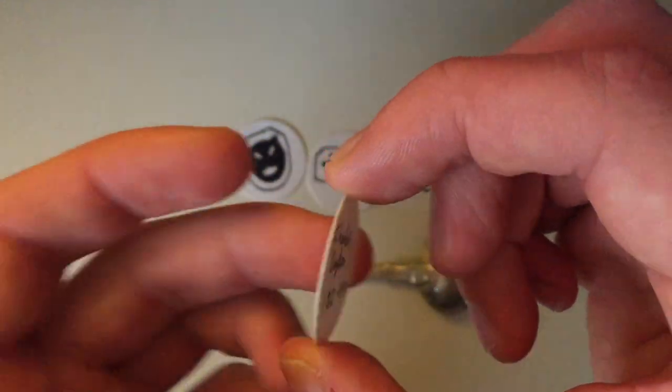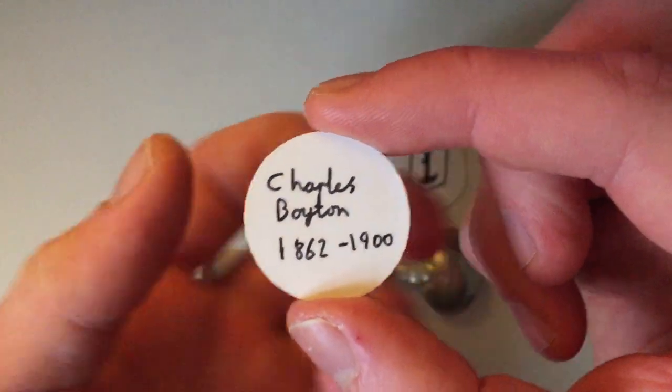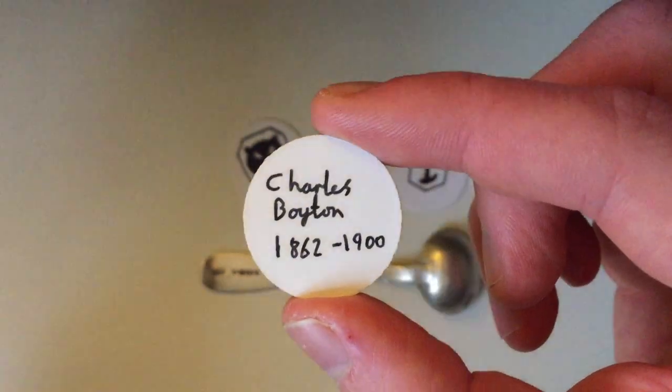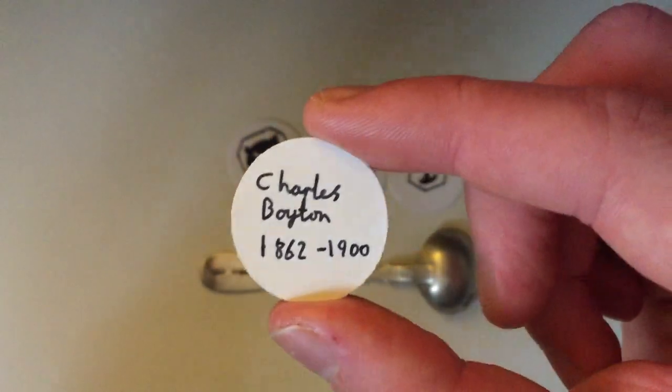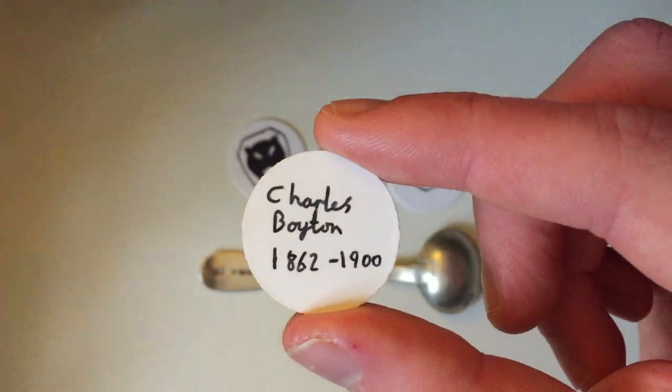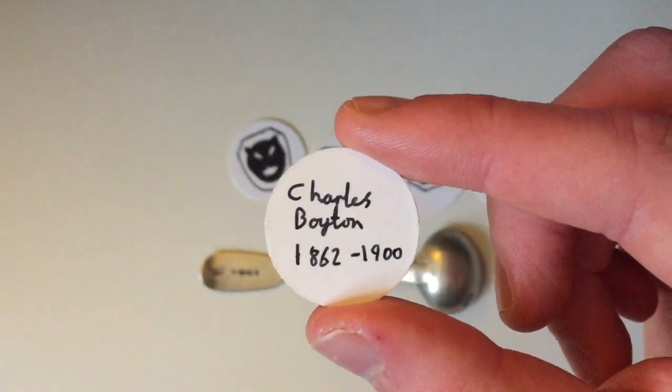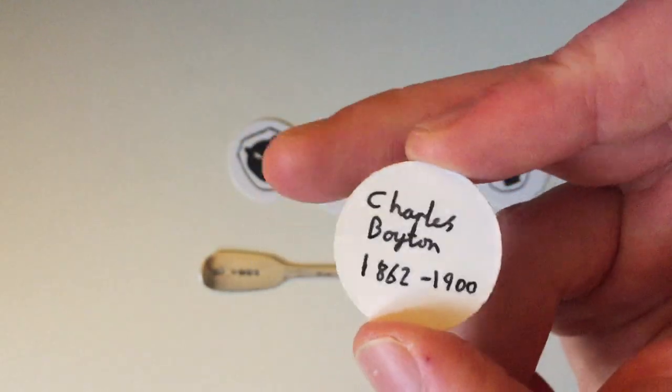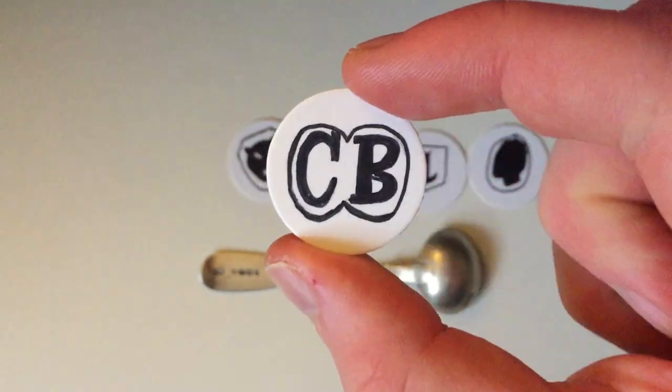So, CB stands for Charles Boyton, and this particular hallmark of his was used between 1862 to 1900. He does have an earlier design, and a slightly later one. He specialized in all kinds of cutlery, and was quite prolific throughout the time he was working, specialized in London.